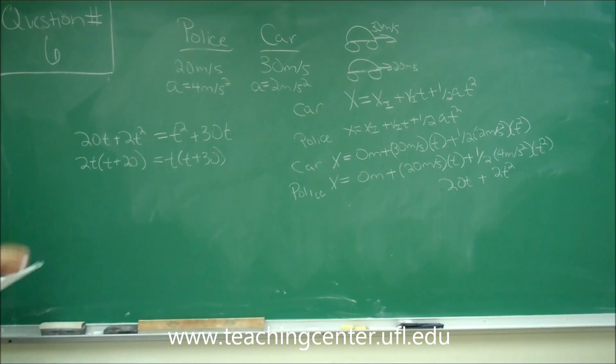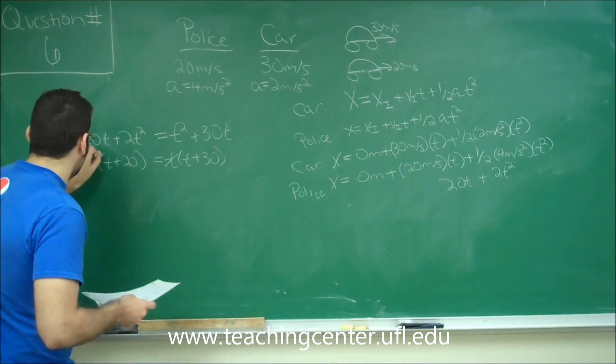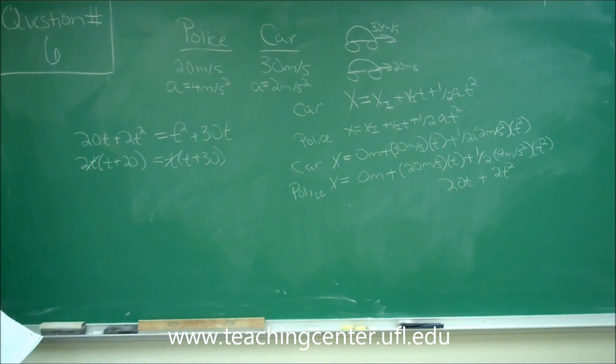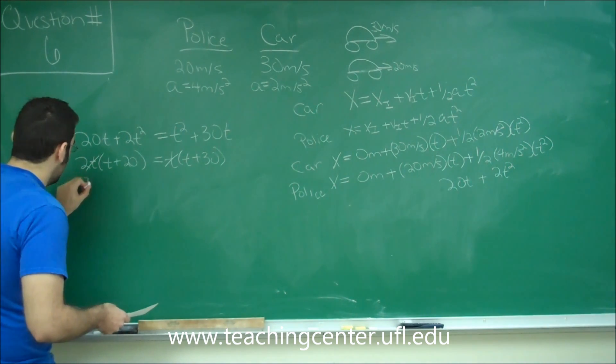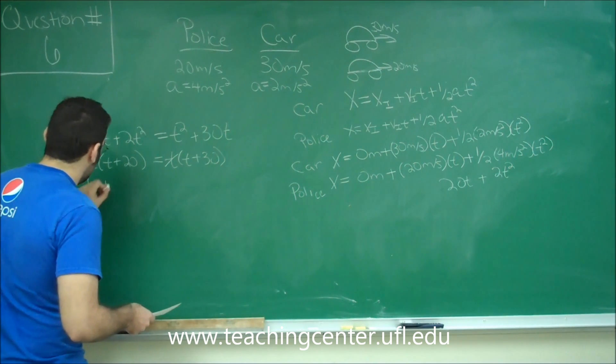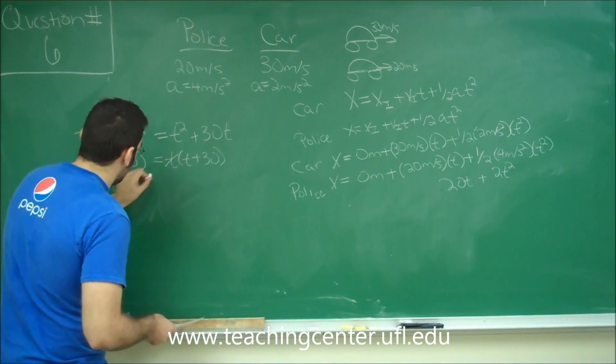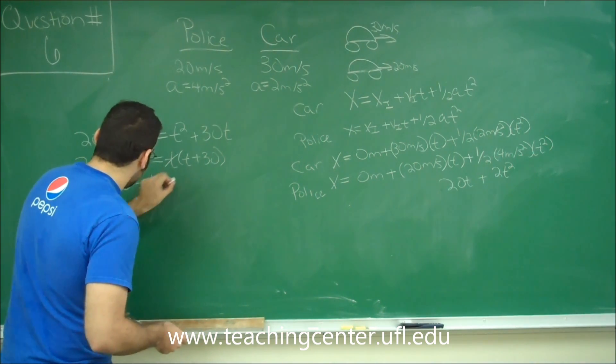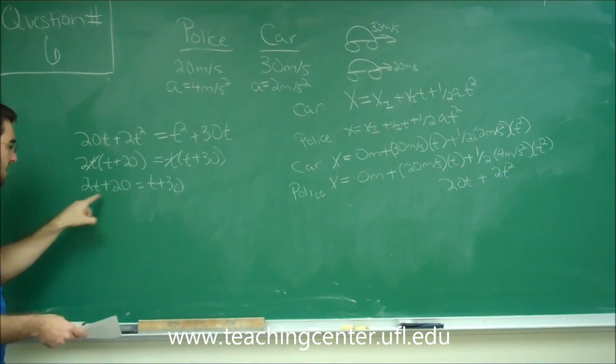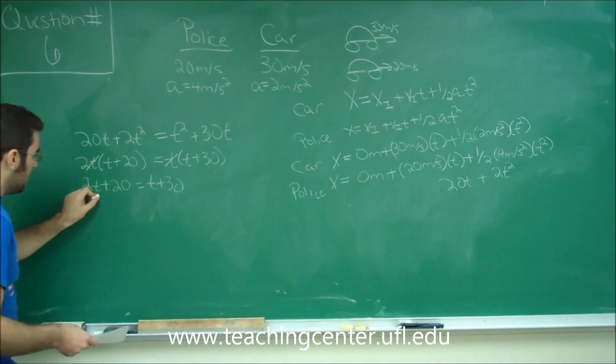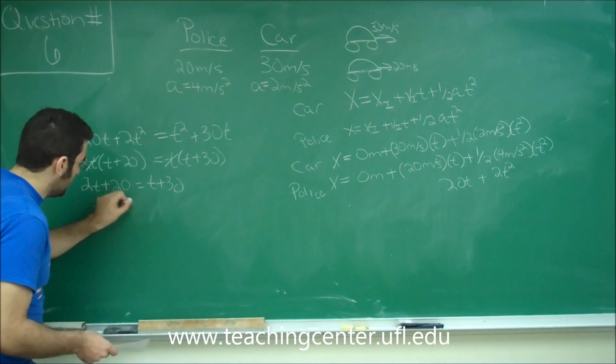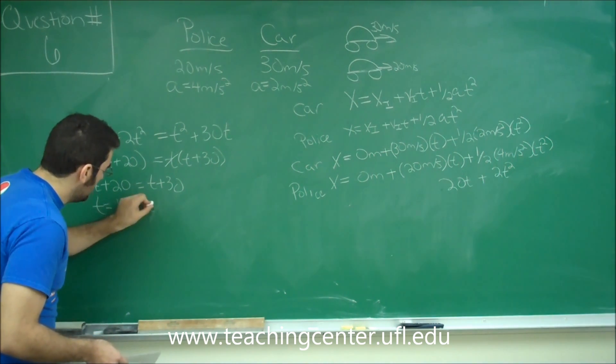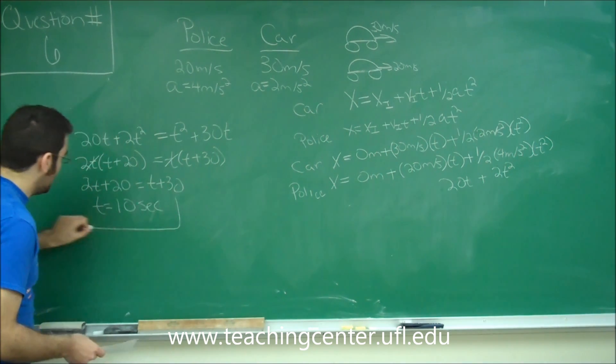And we can cross the t's out that we just factored out. So now it's 2 times t plus 20 is equal to t plus 30. So if we go ahead and multiply back through, 2t plus 20 equals t plus 30. Subtract this t here. Subtract 20 here. So t ends up equaling a time of 10 seconds.